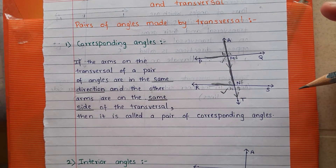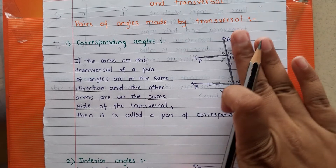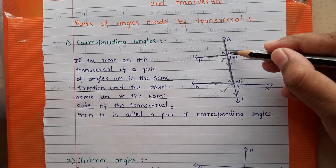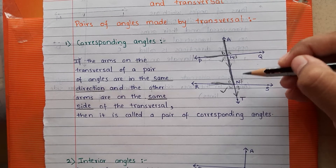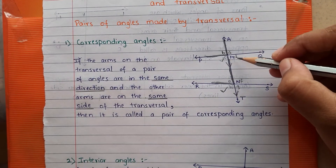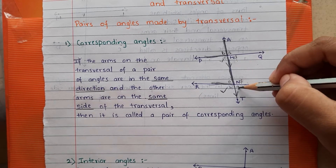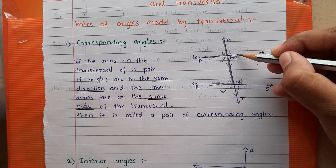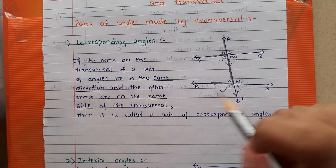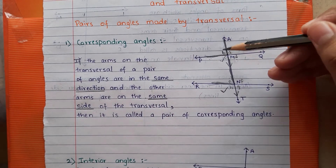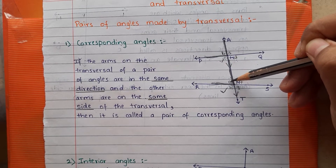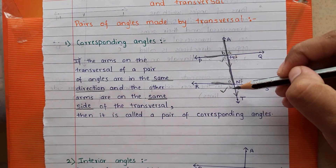One more trick to remember: A and F are both on the right side, and A is above its given line, F is also above its given line — so both are right and above their respective lines, making them corresponding. D and G are both on the right side and both are below their respective lines. B and E are both on the left side and both are above their line. C and H are corresponding in the same way.